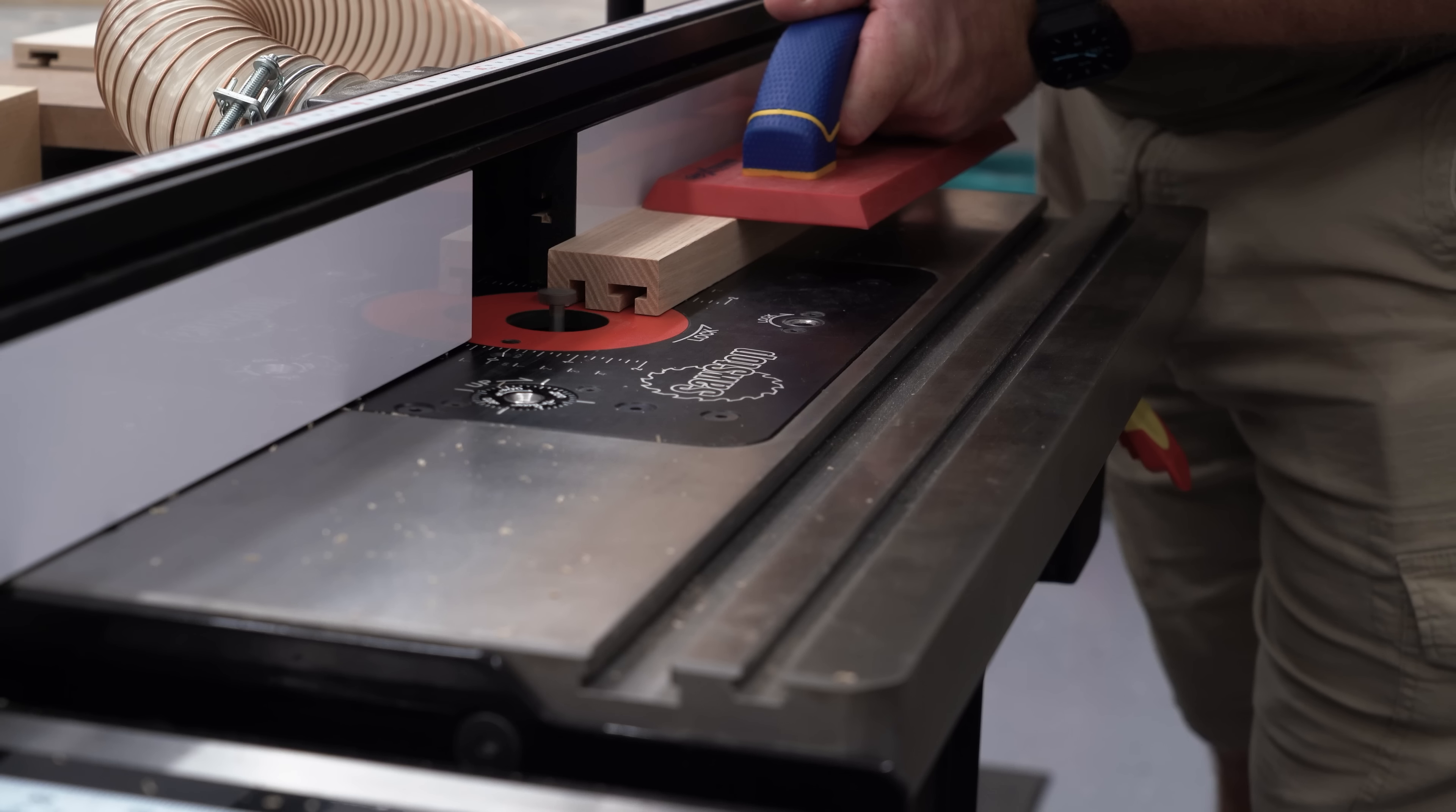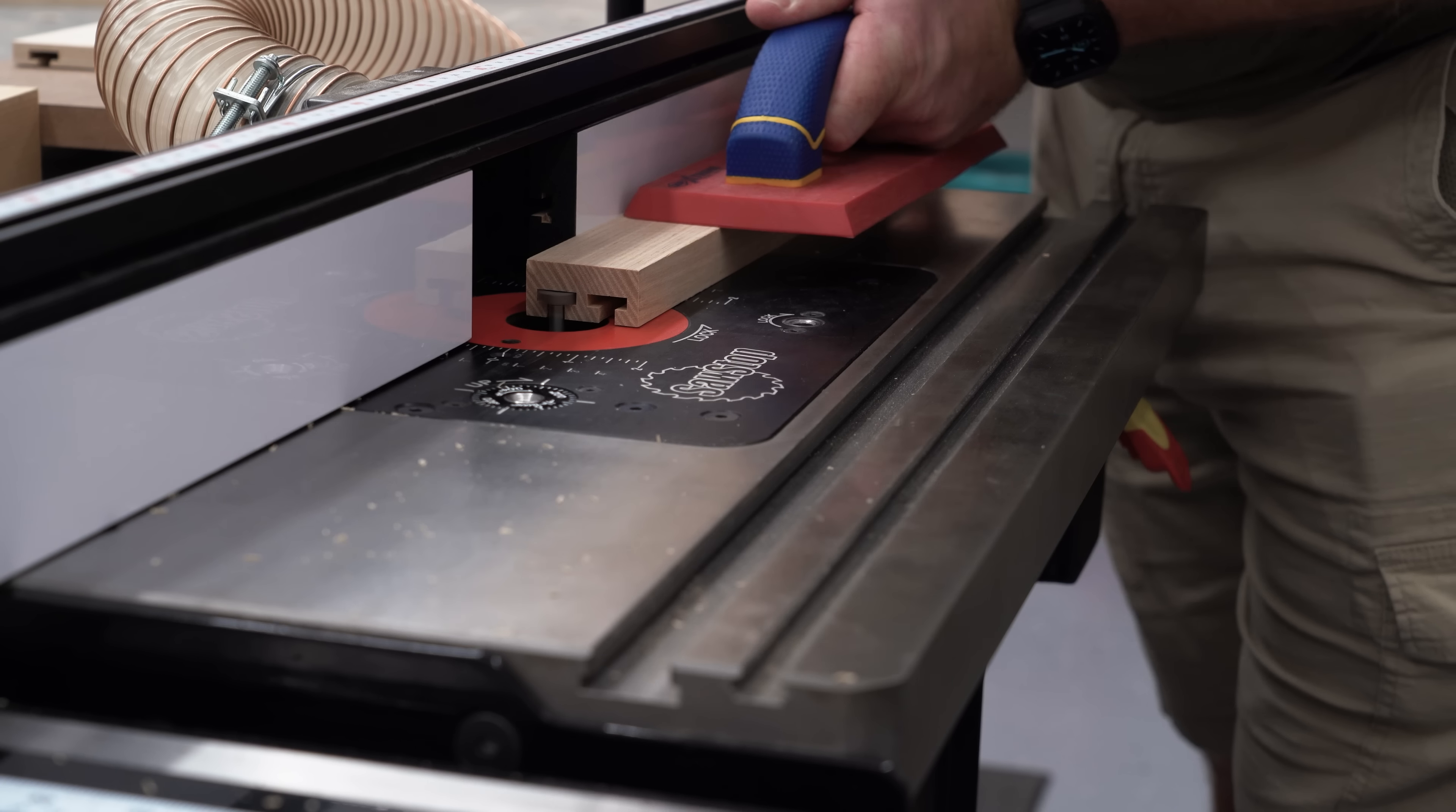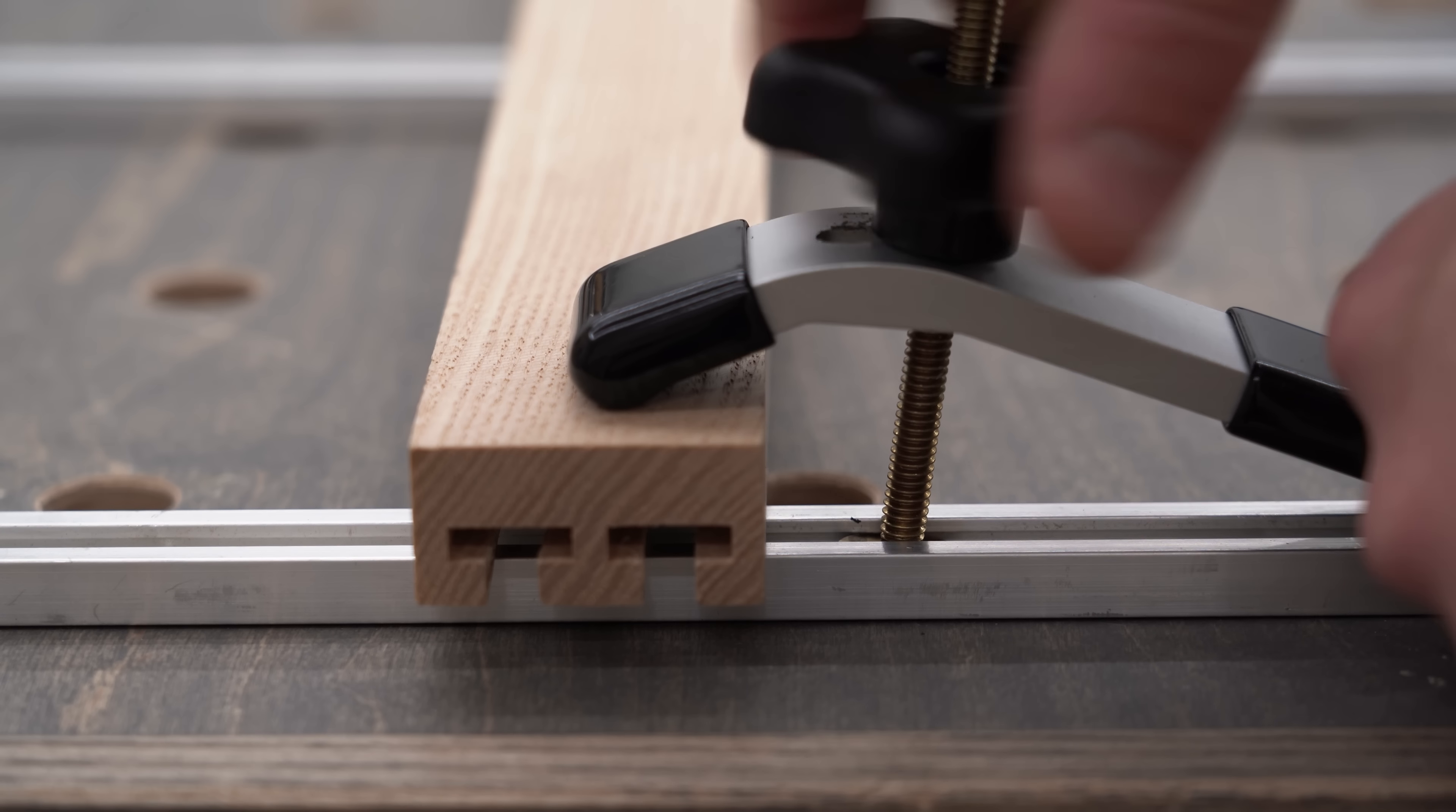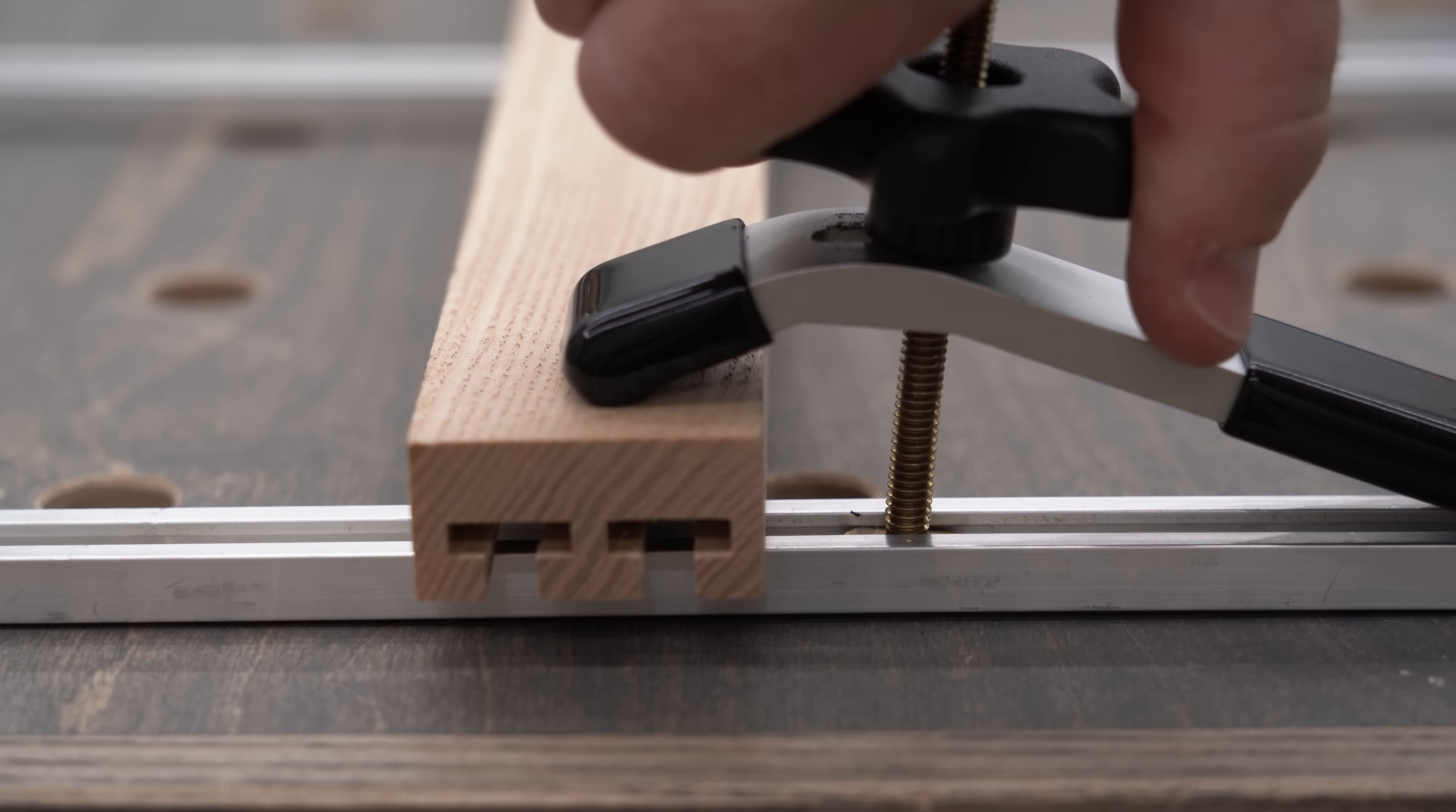In some situations, you can combat this by routing the track deeper into the material. But since aluminum is stronger than plywood layers or wood grain either way, aluminum track is sometimes the only way to go.